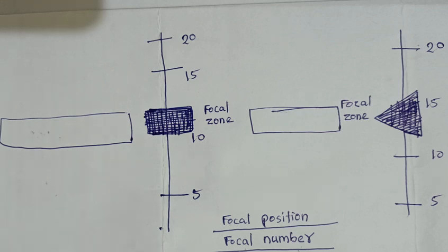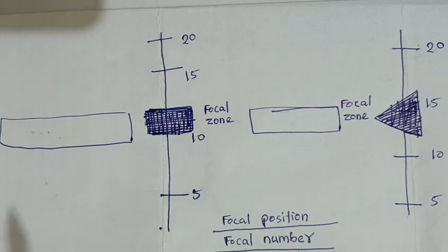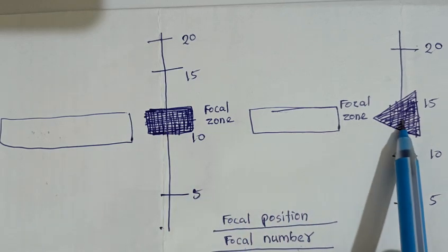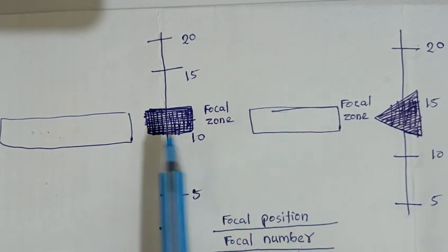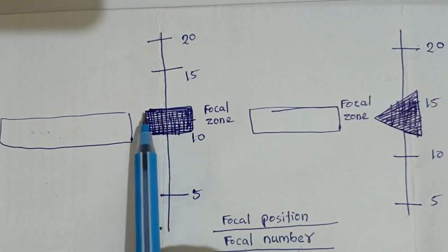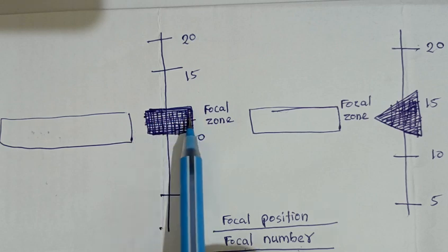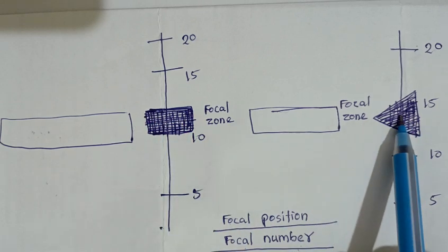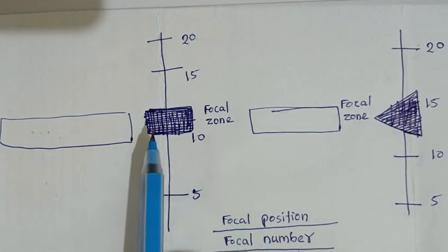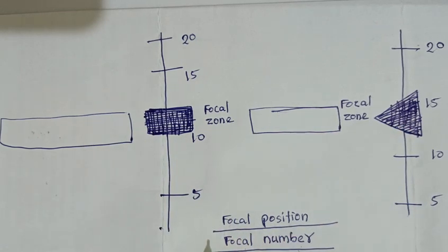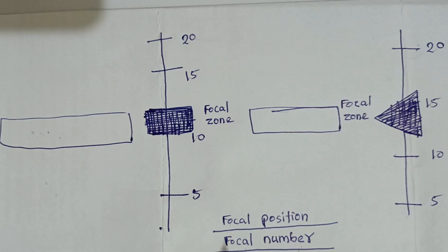Focal zone is represented on the monitor as a rectangular shape or triangular shape. Focal zone has two headings: one is focal position and another is focal number.